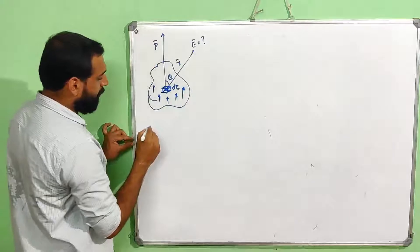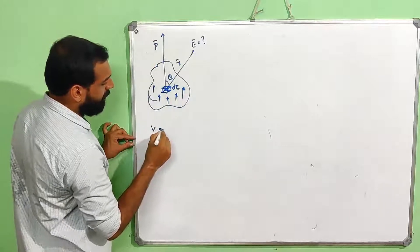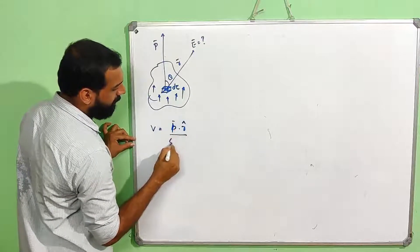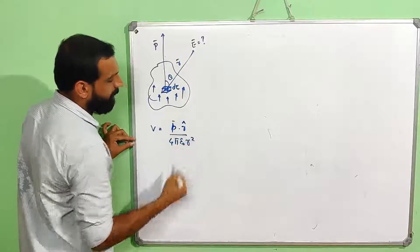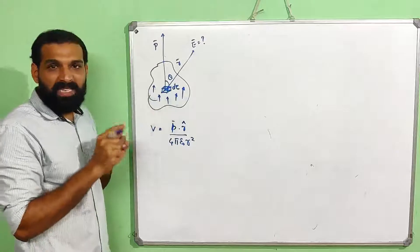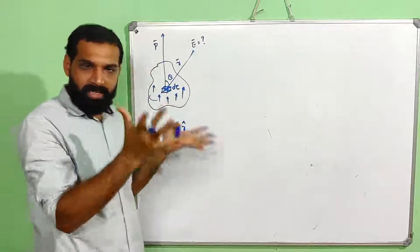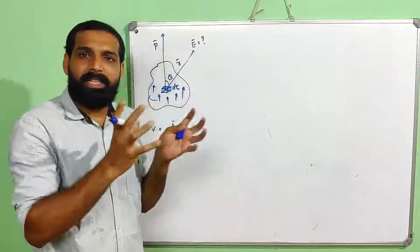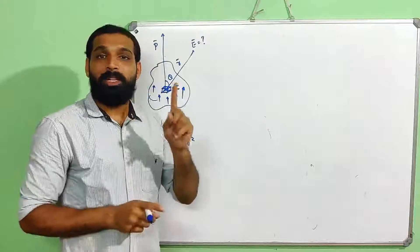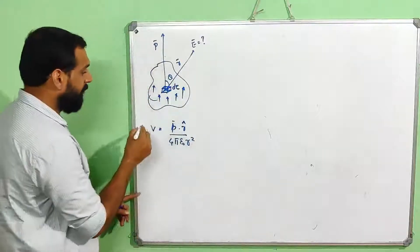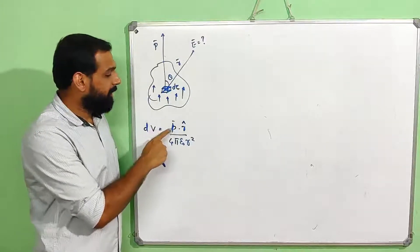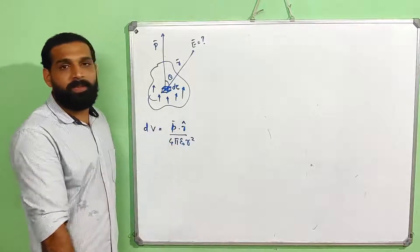The potential due to a polarized object is V equal to p dot r-cap divided by 4 pi epsilon 0 r squared.